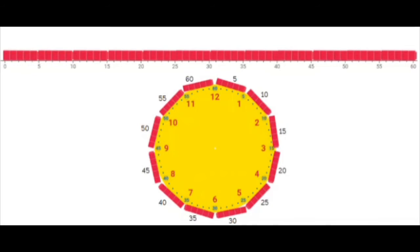Ask students: how are the number line and analog clock different? Student responses may include: one is a number line and one is round, or one has hands and the other one doesn't. Discuss how the linking cubes represent a linear model of the 5-minute increments on a number line. If linking cubes are placed in increments of 5 on the analog clock, one hour is represented.